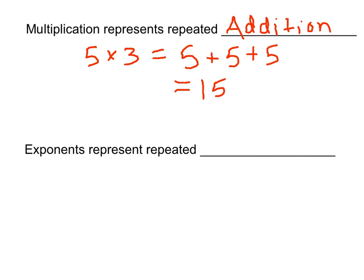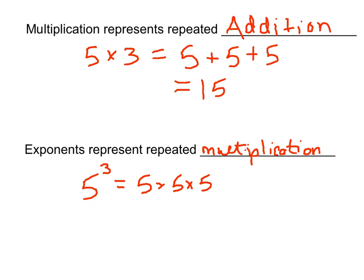Exponents are similar in that they represent repetition, but we're not using addition. Exponents represent repeated multiplication. So when something has an exponent — let's say 5 to the third power — this little number up here tells you to multiply 5 times itself 3 times. So this will be equal to 5 times 5 times 5. We have repeated multiplication, 3 times, and we see that gives you 125.